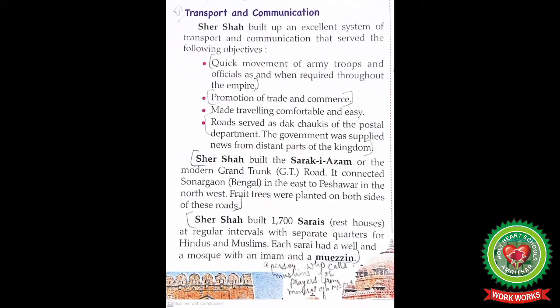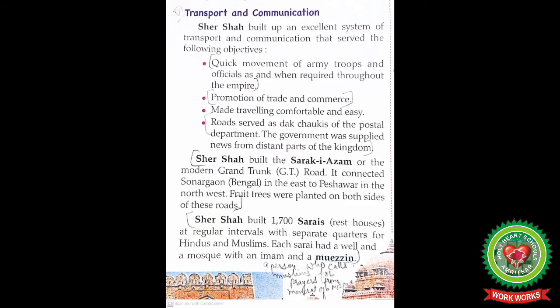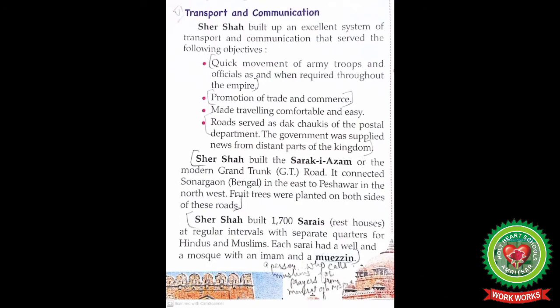These roads were provided with rest houses or sarais at regular intervals — 1,700 sarais were constructed with separate rooms for Hindus and Muslims. He followed a policy of religious tolerance and placed people in the administration according to their merit. Trees were planted on both sides of the roads, and mukadams were responsible for the safety of travelers and their property. The sarais gradually became centers of trade, with towns and cities developing around them. Horse riders delivered post from one chowky to the next.